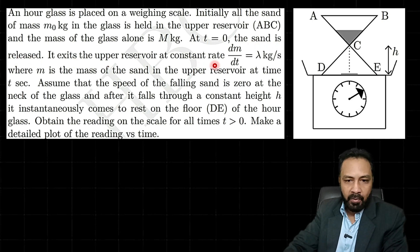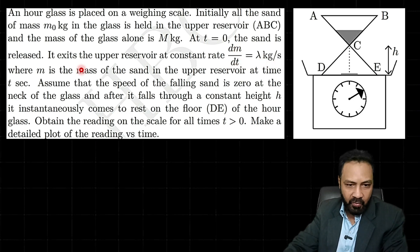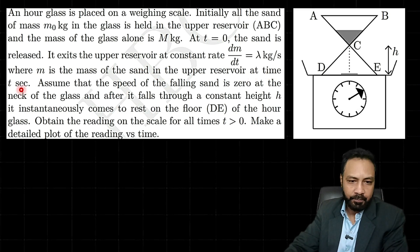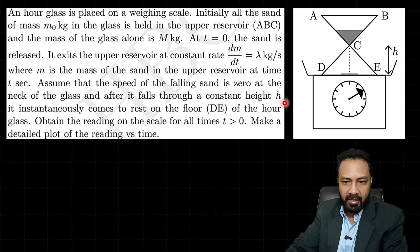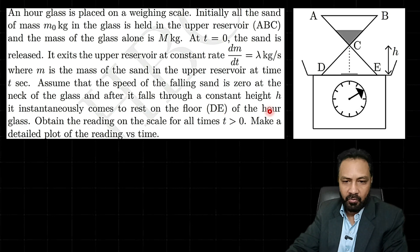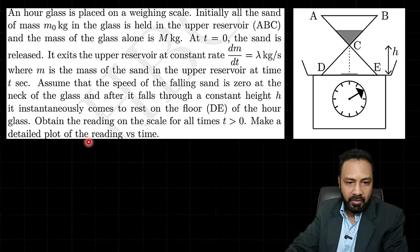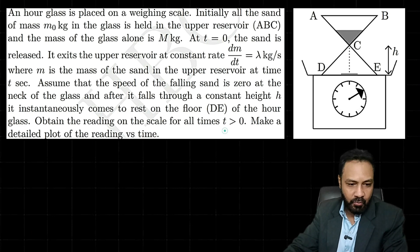The sand exits the upper reservoir at the constant rate dm/dt = λ kg per second, where m is the mass of the sand in the upper reservoir at time t. Assume that the speed of the falling sand is zero at the neck of the glass, and after it falls a constant height h, it instantaneously comes to rest on the floor D of the hourglass. Find the reading of the scale for all time t > 0, and make a detailed plot of the reading versus time.